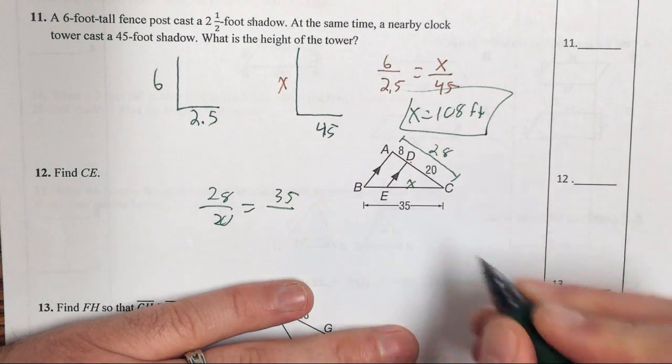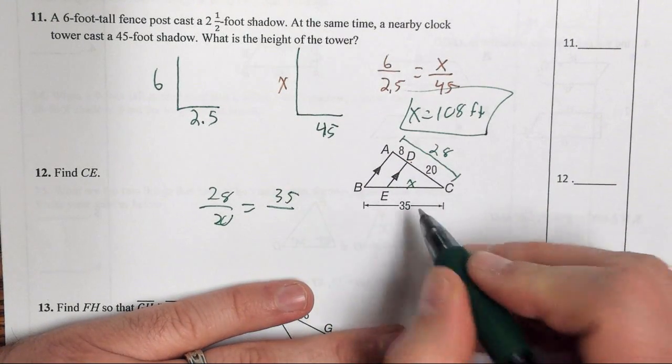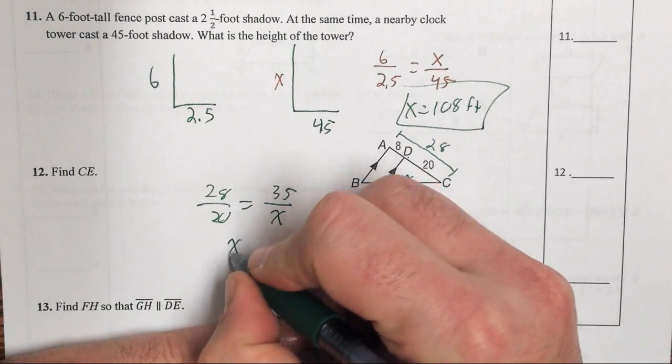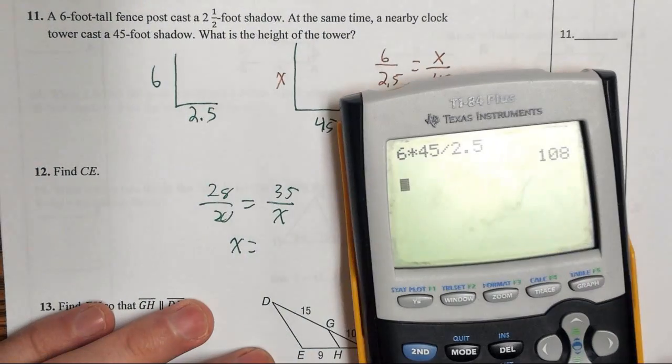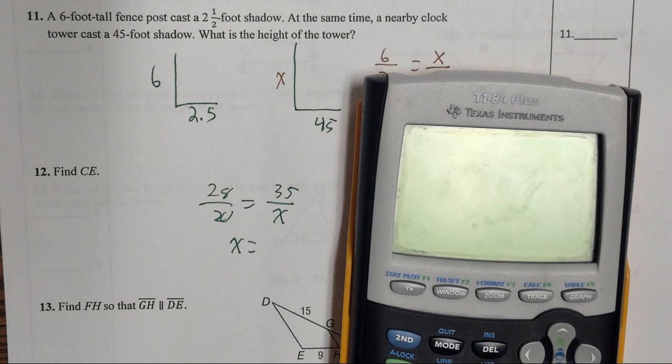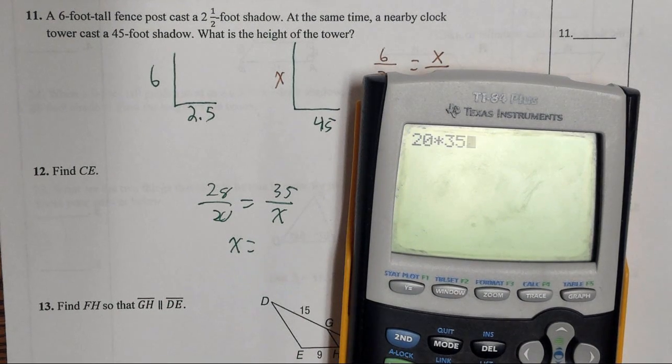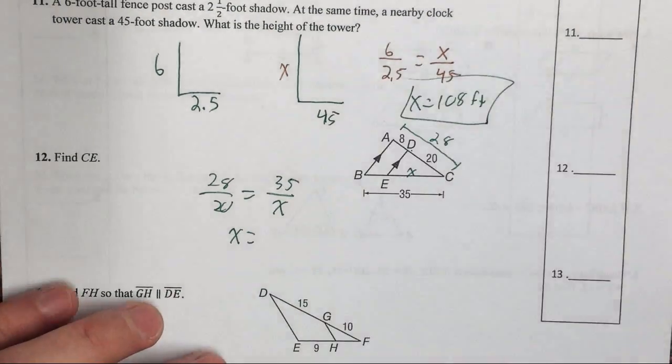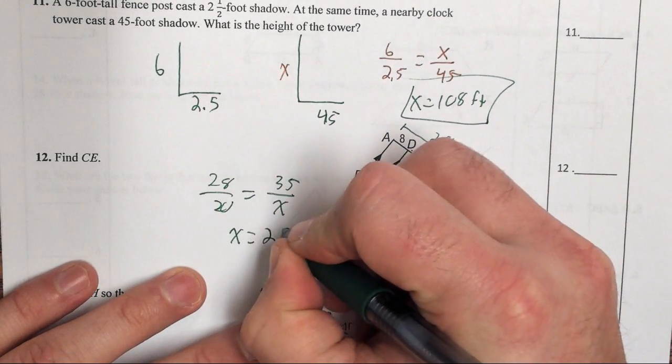So the 35 is going to go on top because it's a part of the bigger triangle, and then X on bottom. Now we just cross-multiply and solve, and we get 20 times 35 divided by 28, 25. So X is 25.